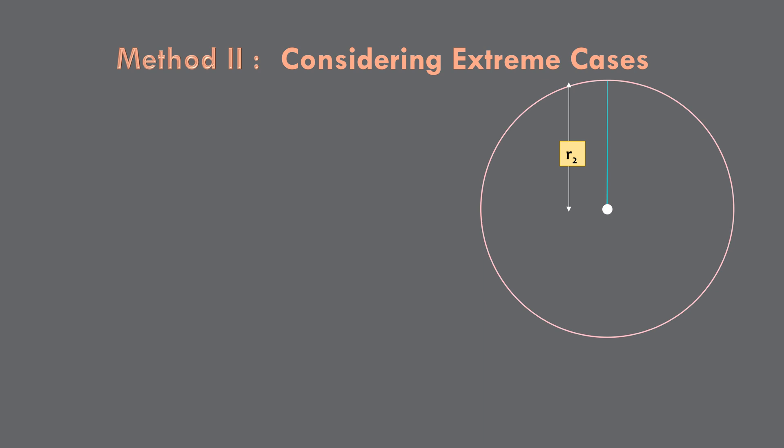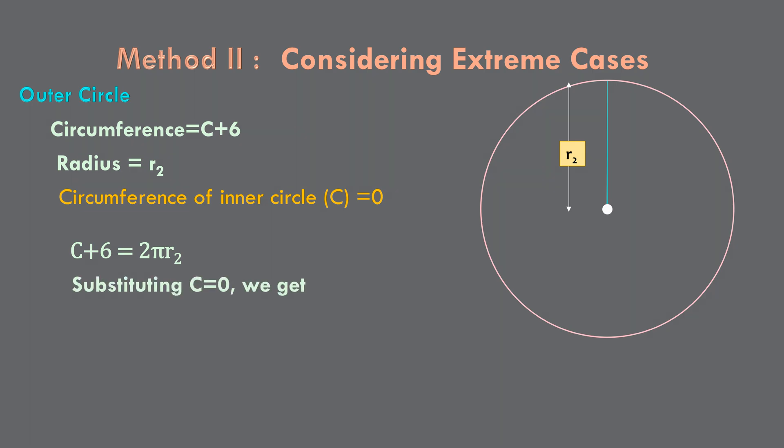Now, all we need to do is to find the radius of the outer circle and our problem will be solved. To find out the radius of the outer circle, we apply the formula for circumference of the larger circle. Here, circumference of the larger circle is c plus 6 and radius is r2. Let's not forget that the circumference of the smaller circle is 0, making c equals 0. Therefore, c plus 6 equals 2 pi r2, replacing c with 0 because the circumference of the inner circle is 0, we get 0 plus 6 equals 2 pi r2 or r2 equals 6 by 2 pi, which is 11.5 inches, which is the same as the answer we found out by traditional method. But this method is quick, easy and elegant, isn't it?